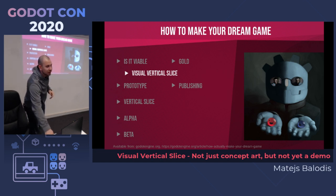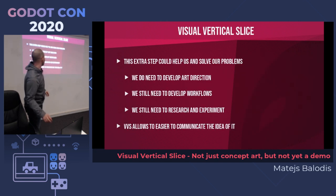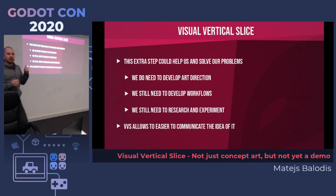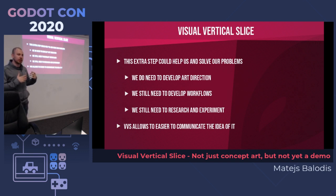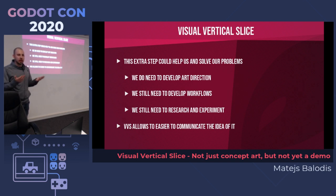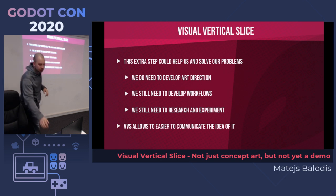I'm not sure how much it will help when creating the vertical slice later, but for us it solves problems like not having an art direction yet — we can work on and figure that out. We're not as experienced in 3D as we are in programming in our team, so we can develop workflows and try things out. We can do a lot of research and experimenting with this approach. And now that we'll have this visual vertical slice, it will be easier to present to other people. Since we do live streams on Twitch, when someone comes and asks what project we're working on, we can already show the visual vertical slice so they better understand what we're making.